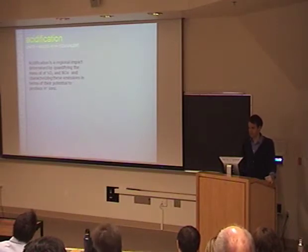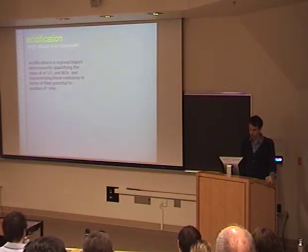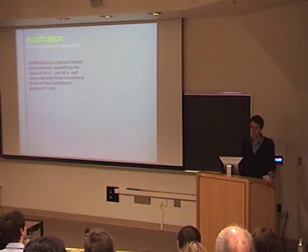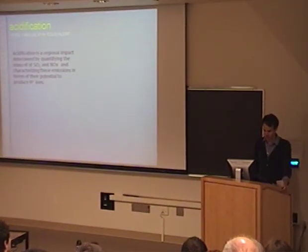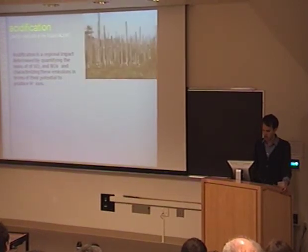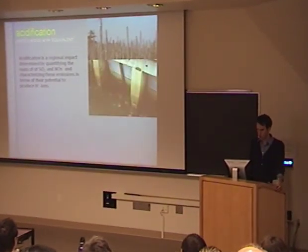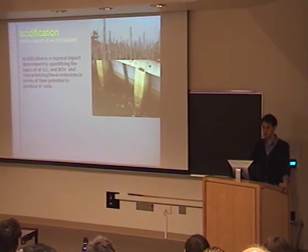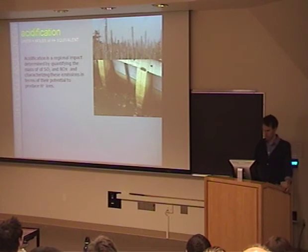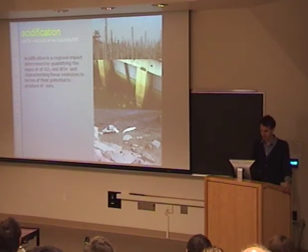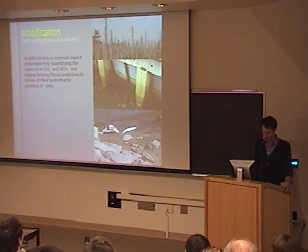Acidification is essentially acid rain. The LCA quantifies all atmospheric emissions and characterizes them in terms of moles of H+ ions they can produce. This is a very regional impact and one that Vancouver is sensitive to. Here is an example of what acidification can do to forests — it can strip the greenery away. It also affects concrete by dissolving calcium hydroxide, causing loss of concrete mass. It can kill fish and wildlife, as shown in this example from Harrison Lake.